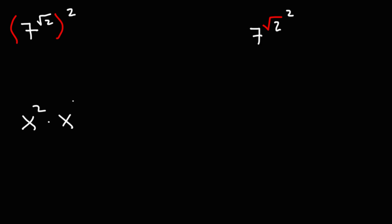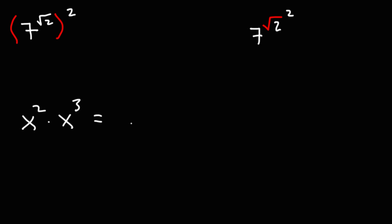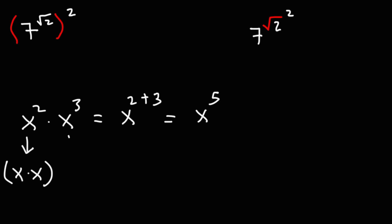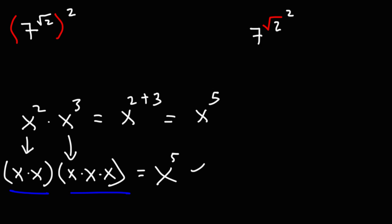When you multiply two terms that have the same base — the base being x — you can add the exponents. So x² times x³ is equal to x raised to the 2 plus 3, or x to the fifth power. x squared means you're multiplying two x variables together, and x cubed means multiplying three x variables, giving five x variables total.